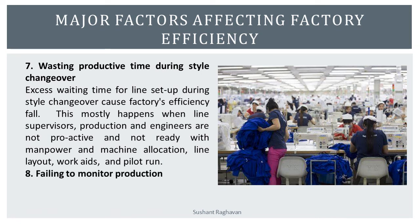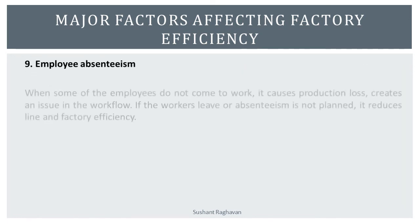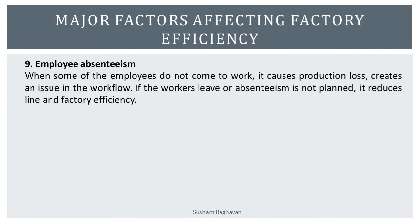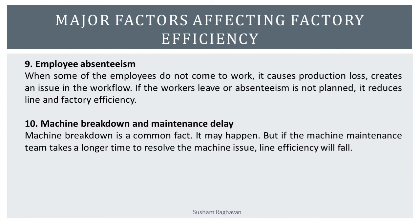Failing to monitor production: no monitoring of hourly production and not chasing operators for target quantity and efficiency. Employee absenteeism: when some employees do not come to work, it causes production loss and creates issues in the workflow. If worker leave or absenteeism is not planned, it reduces line and factory efficiency. Machine breakdown and maintenance delay: machine breakdown is a common occurrence, but if the maintenance team takes a longer time to resolve the issue, line efficiency will fall.